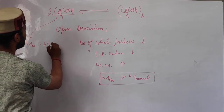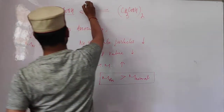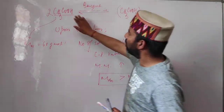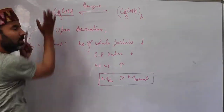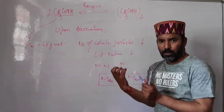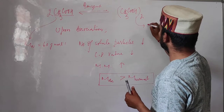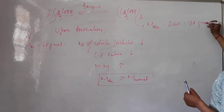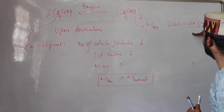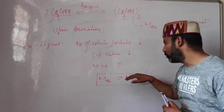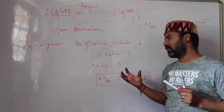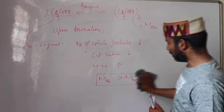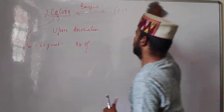The normal molar mass of acetic acid, calculated from its formula, is 60 g/mol. But in benzene, acetic acid dimerizes. So in a benzene solution you don't get individual acetic acid molecules; instead you get a dimer. If dimerization is 100%, the observed molecular mass will be twice 60, that is 120 g/mol. So whenever association takes place, the observed molecular mass will always be greater than the normal molar mass — we get abnormal molar mass.